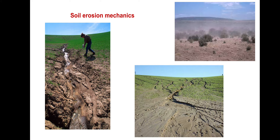These mechanisms are the same for surface irrigation, sprinkler irrigation, and rainfall. However, there are some systematic differences between irrigation and rainfall erosion, and especially between surface irrigation and rainfall.